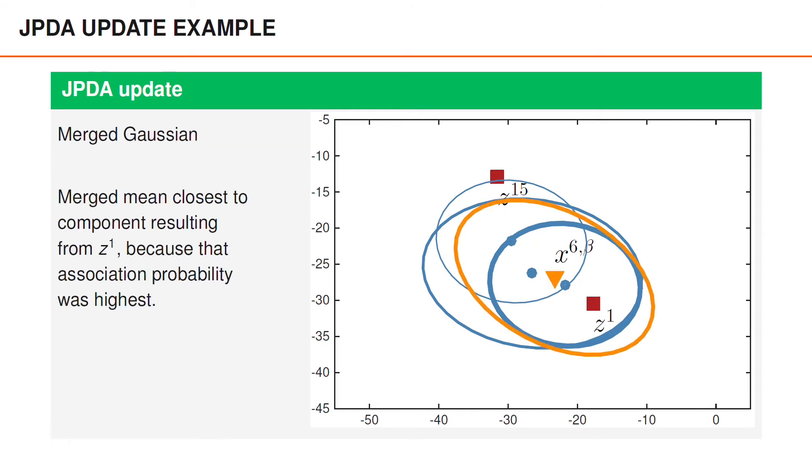And lastly, we have the merged mean in covariance, shown by an orange triangle and an orange ellipse. The merged mean is closest to the mean resulting from measurement 1, because that association probability was highest, 0.77. The merged covariance is larger than the covariance for association to measurement 1, due to the fact that with probability 0.23, the correct association was either measurement 15 or a misdetection.